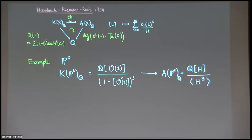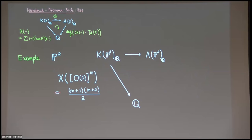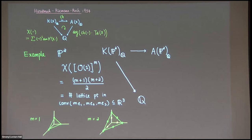Here is a short example. The K-ring of ℙ² is generated by 𝒪(1), with the relation that the structure sheaf of a hyperplane to the third power gives zero. On the Chow ring side, we have a similar ring using generators which are the class of a hyperplane, with similar relations. The Chern character sends the class of 𝒪(1) to one plus the hyperplane class plus the hyperplane class squared divided by two. The Euler characteristic of a monomial 𝒪(1)^m is given by a specific formula, which we can verify.